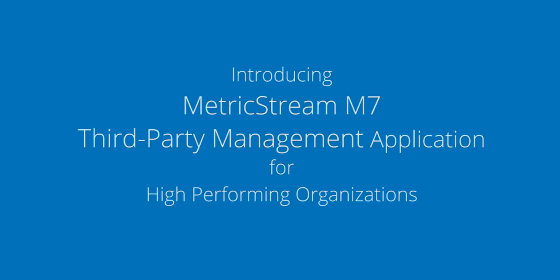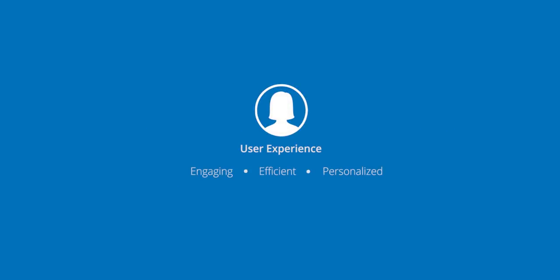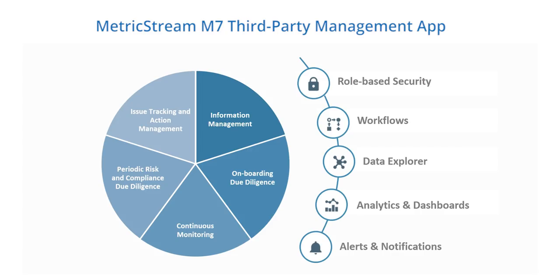This presentation introduces the MetricStream M7 third-party management application for high-performing organizations. The user experience is engaging, efficient, and personalized, helping to strengthen visibility into third-party risk and compliance. The application enables a comprehensive process to identify, assess, mitigate, and monitor third-party risks and manage compliance.